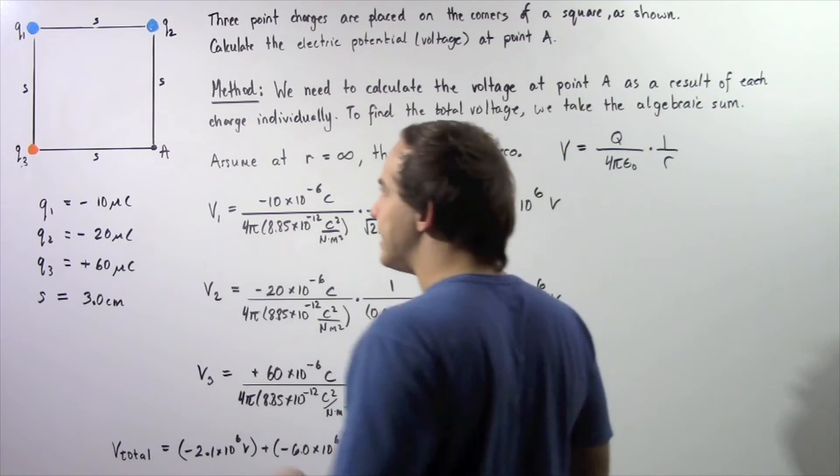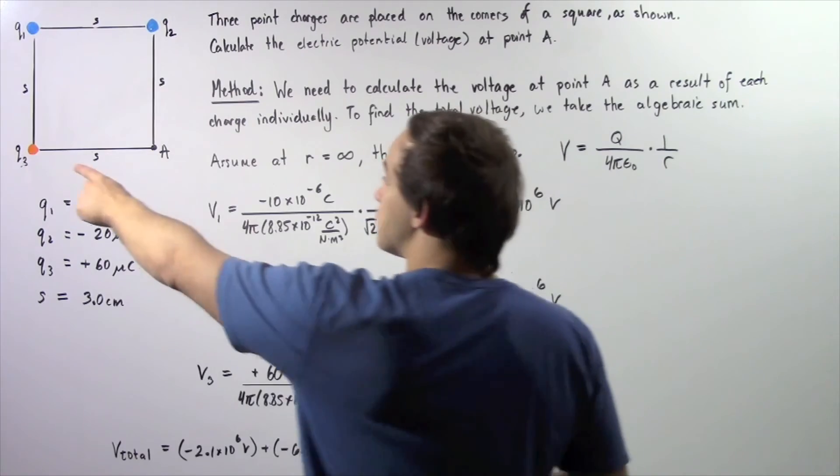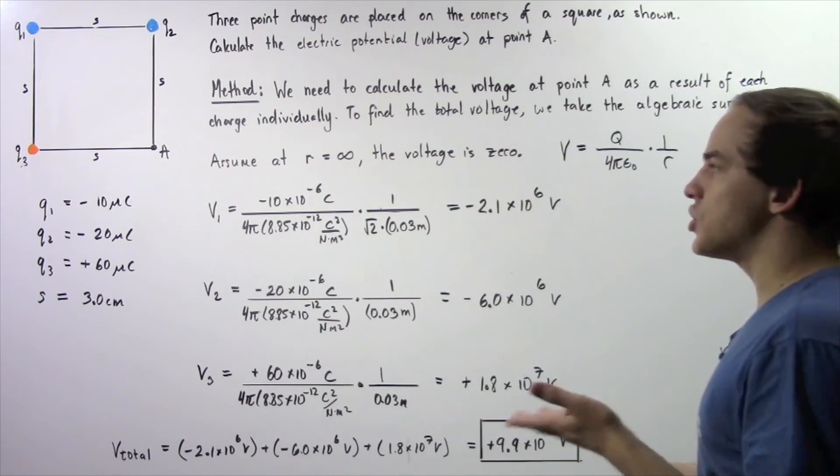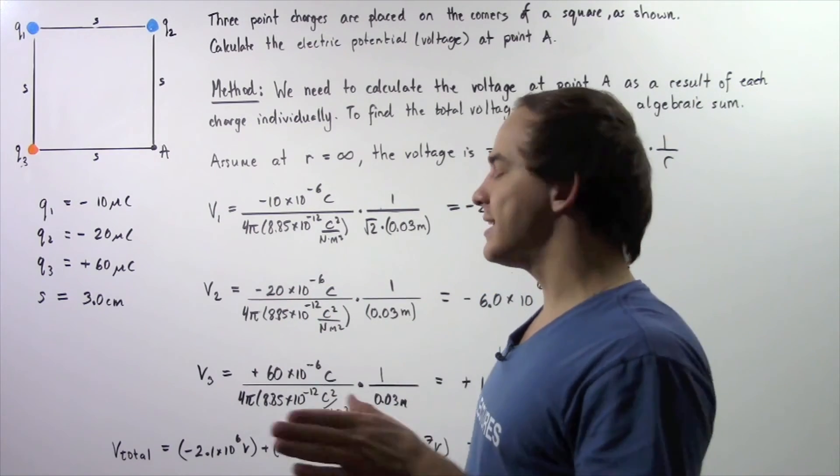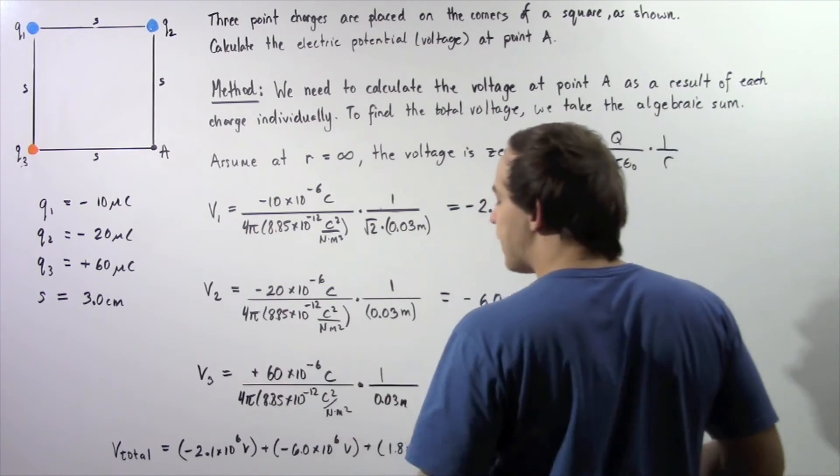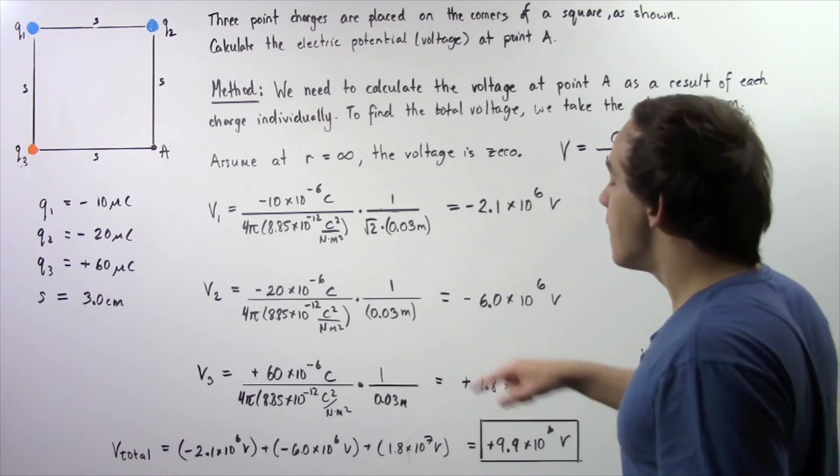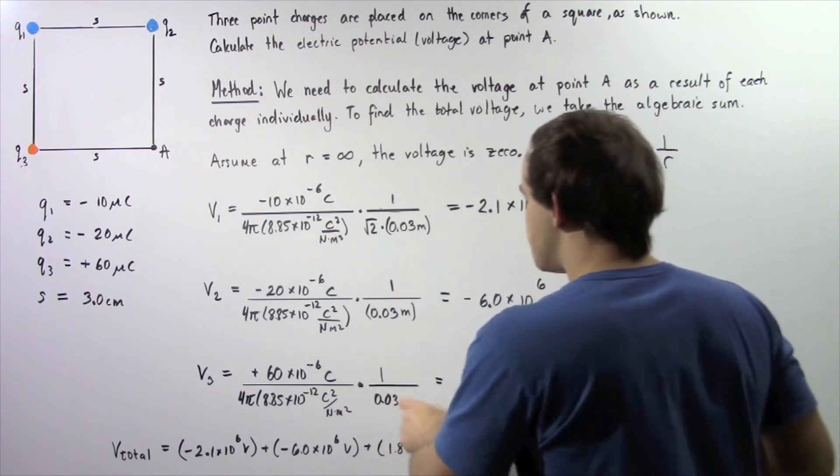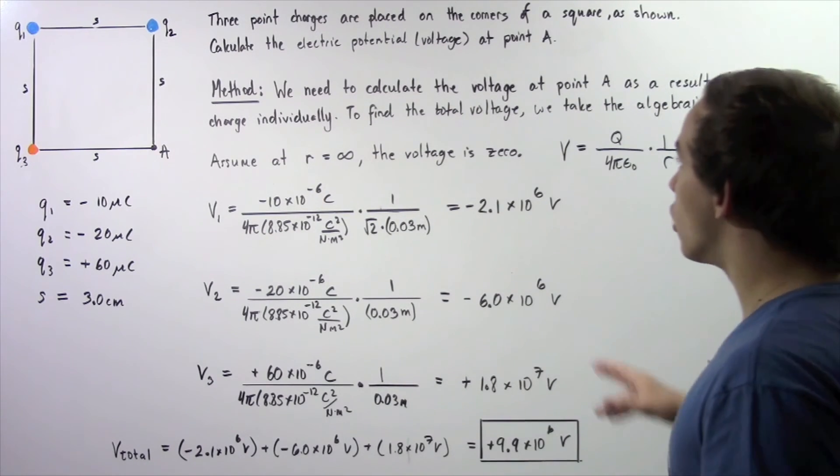Finally, to calculate the voltage at point A as a result of charge Q3, we simply plug in the quantity of charge on that point charge, which is positive 60 times 10 to the negative 6 Coulombs, divide that by 4 pi multiplied by epsilon naught multiplied by 1 divided by this distance, which is 0.03 meters, and we get about 1.8 times 10 to the 7 volts.